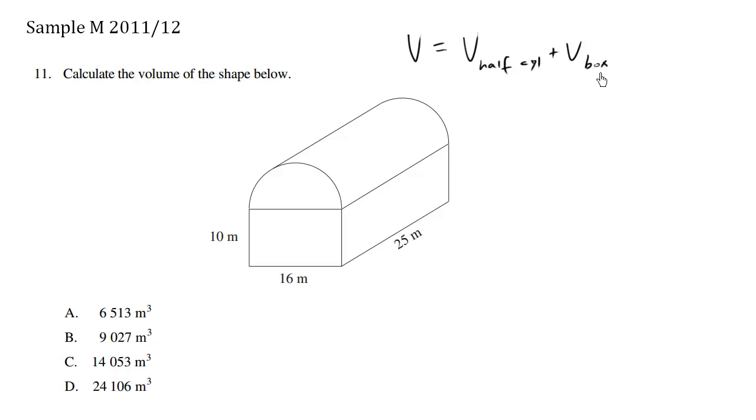Now we know what the volume of the box is. The volume of the box is simply length times width times height. So the volume of the box is equal to 10 times 16 times 25, which we can use our calculator to figure out.